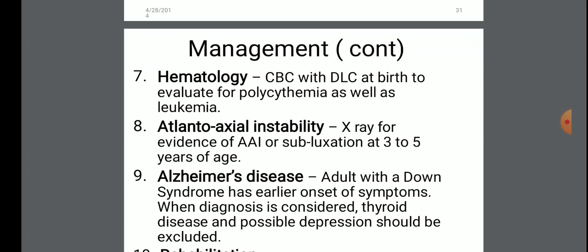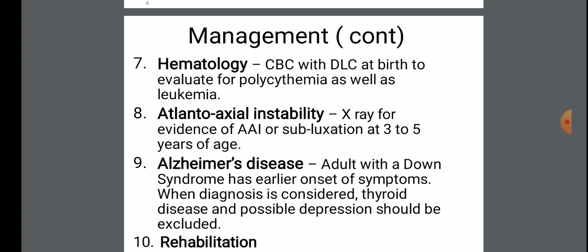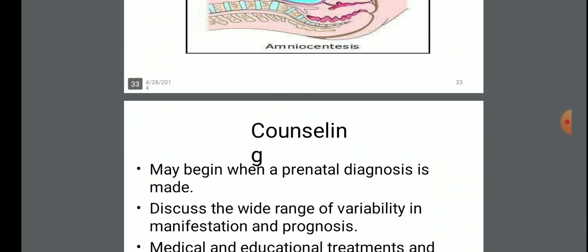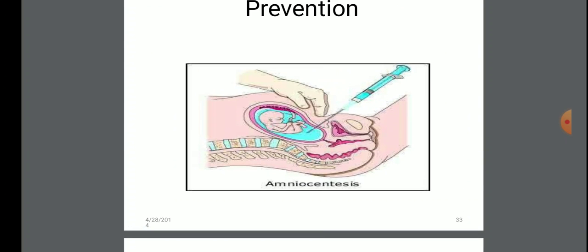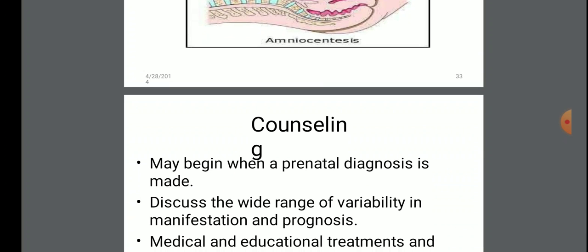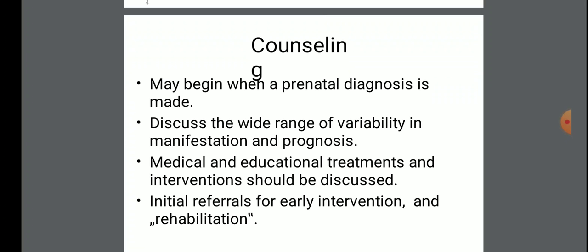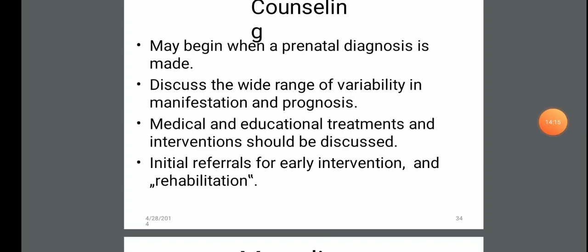Hematology: CBC and DLC at birth to evaluate polycythemia as well as leukemia. Alzheimer's disease rehabilitation and prevention of the disease is important for the future. Counselling regarding diagnosis may begin when a prenatal or postnatal diagnosis is made. Discuss the range of variability in manifestations and prognosis. Medical and educational treatment and interventions should be discussed, with initial referrals for early intervention and rehabilitation.